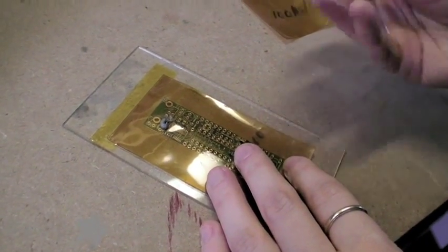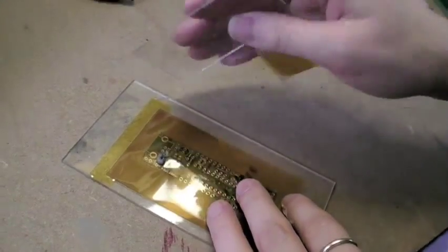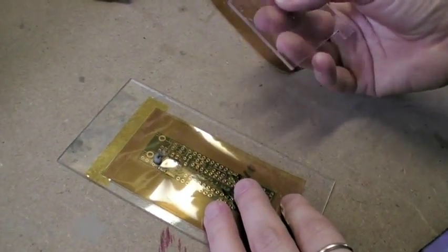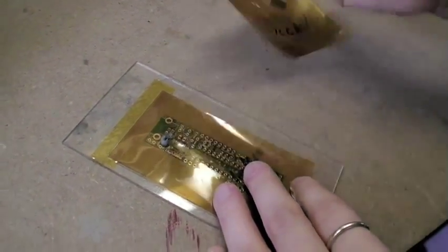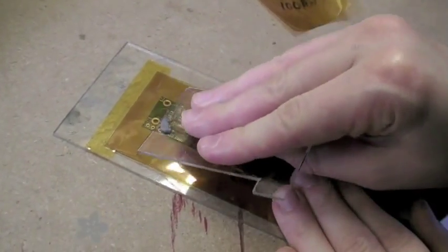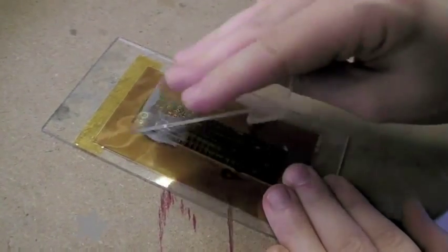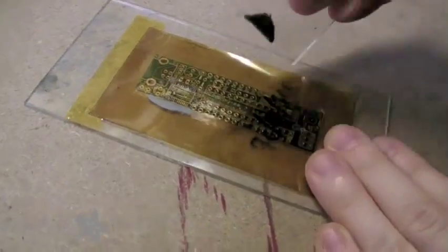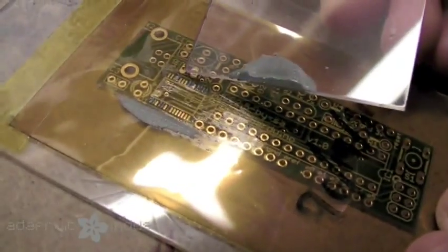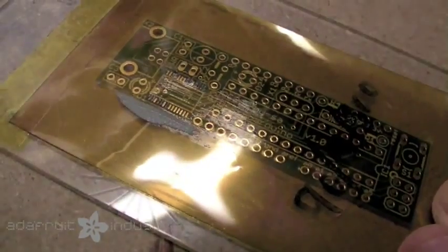You take a piece of acrylic, just a square - or you can use a paint scraper or a squeegee, but this works okay. You just squeegee it over. So you see there's solder in the little holes that were cut out of the stencil.